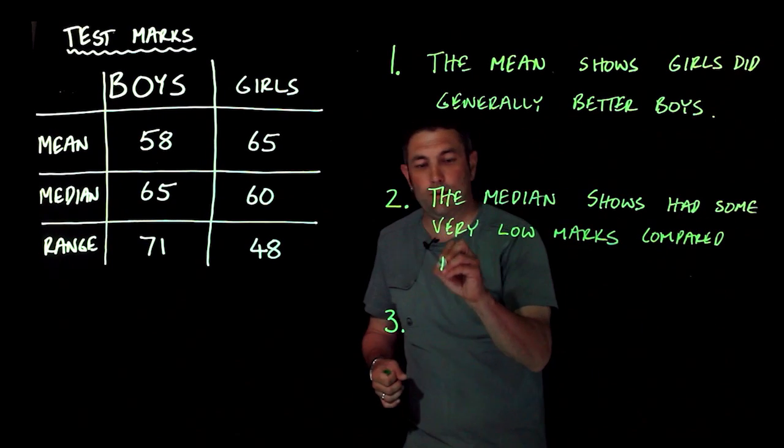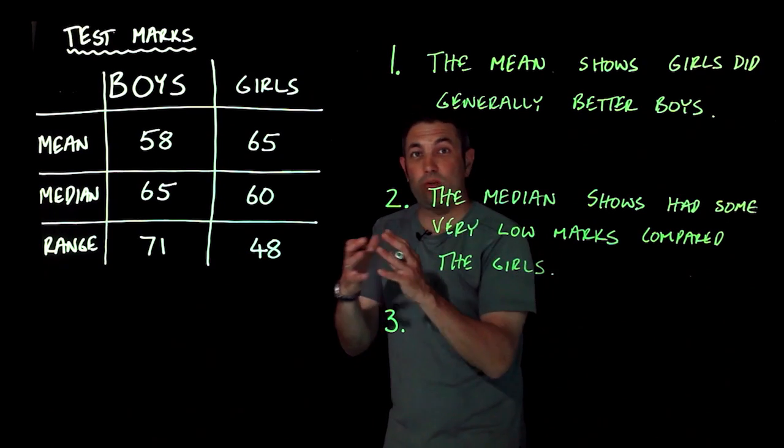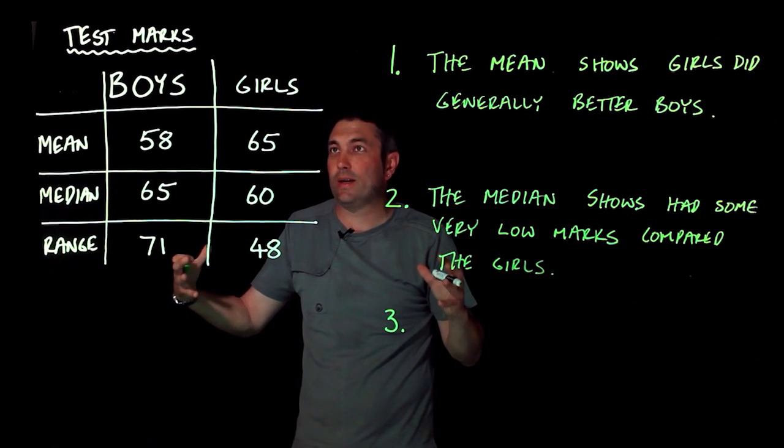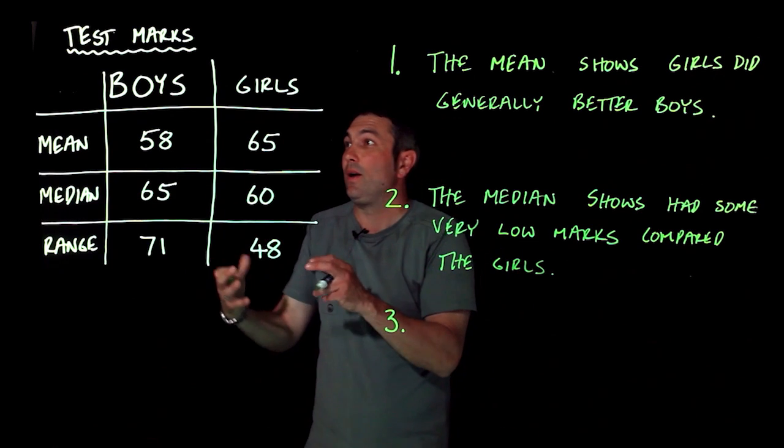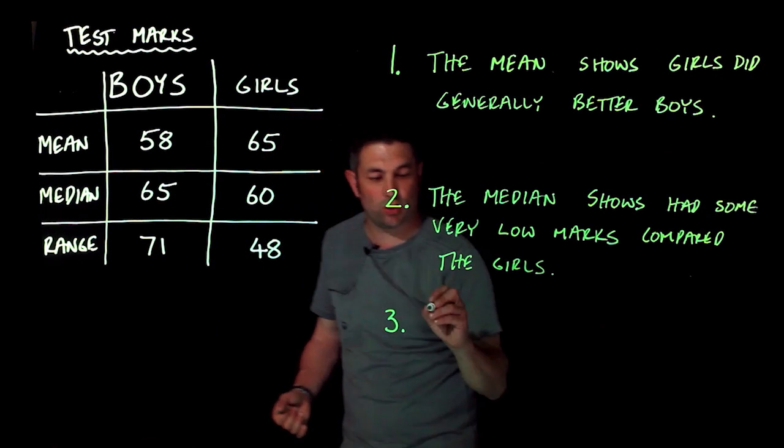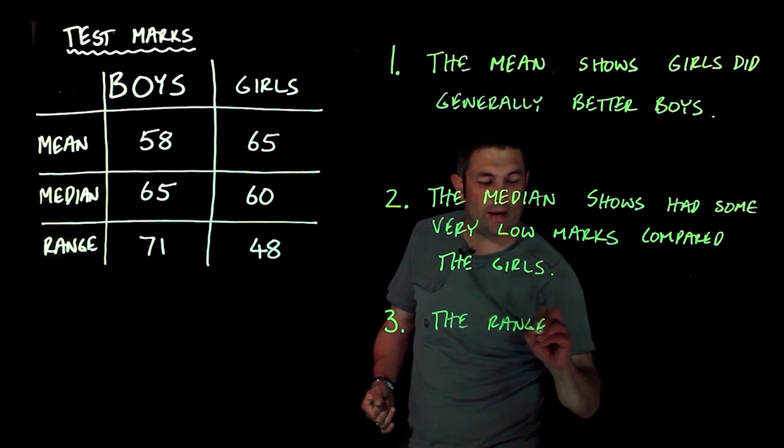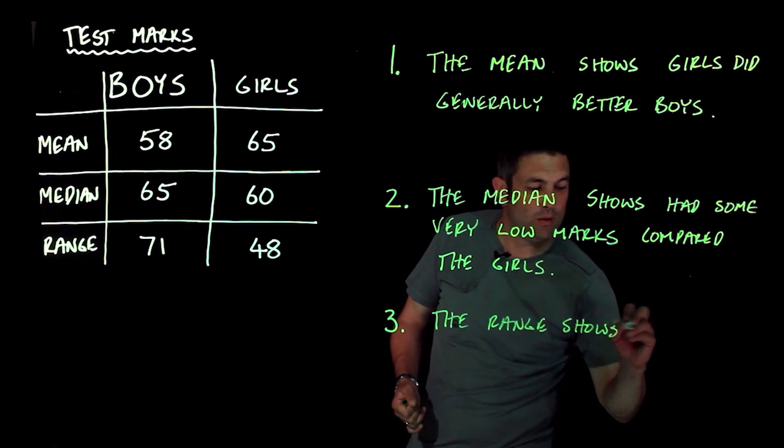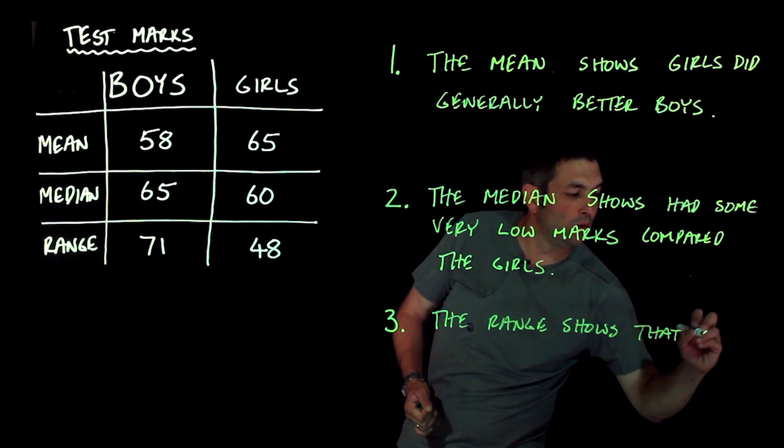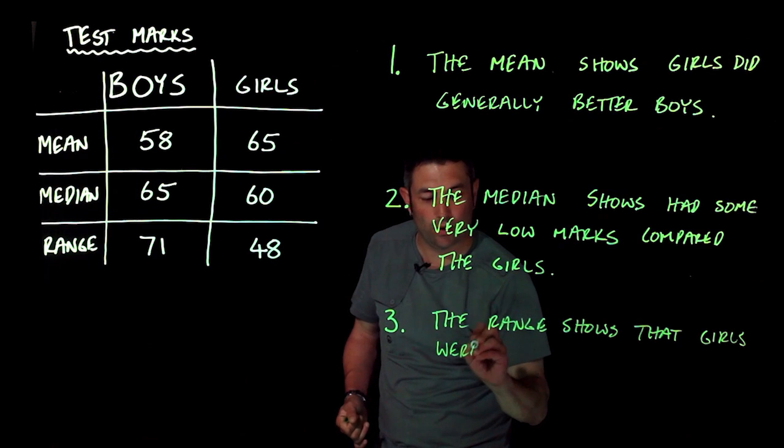Now finally, we're going to be looking at the range, and the range is a measure of spread. So how spread out are the data, are the bits of data. Now the boys have 71 as a range, the girls have 48, and so the range shows that girls were more consistent with their marks.